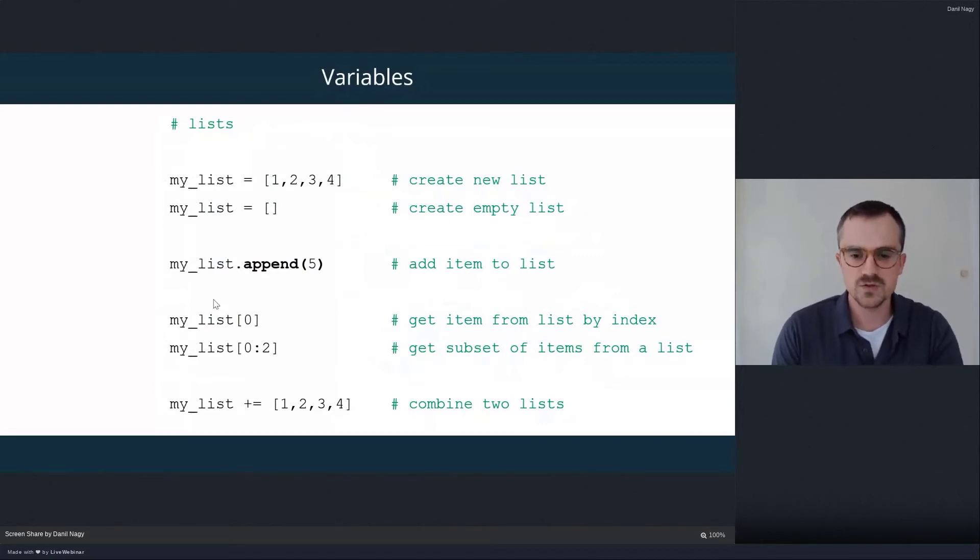And there's really two types of multi-element variables in Python. One is called lists and one is called dictionaries. And it's really important to understand how both of them work and how they're different because we use them both for particular reasons in Python.